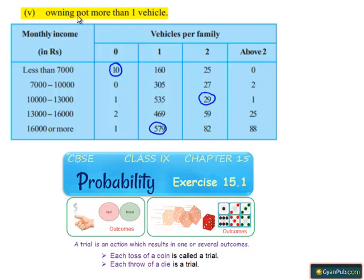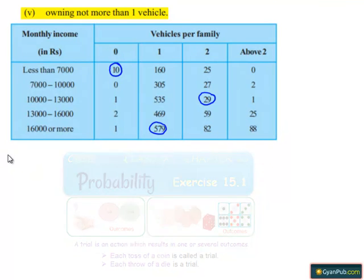Coming to the fifth bit, owning not more than one vehicle. Moving on to the solution,